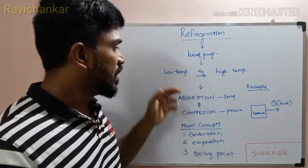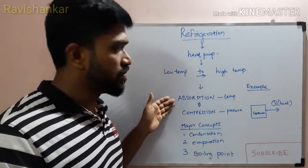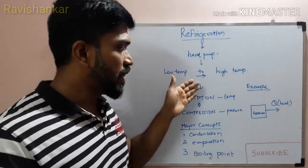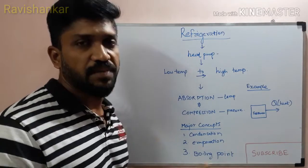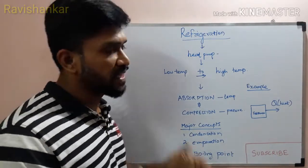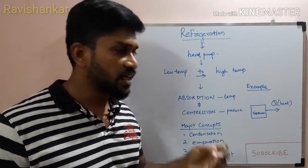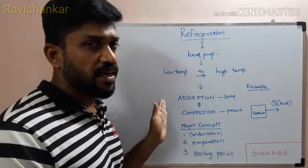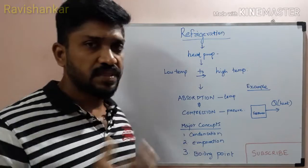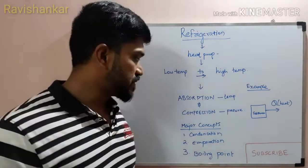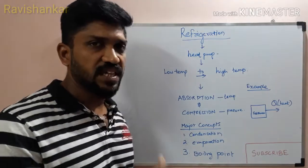There are two types: Absorption and Compression. A compressor is used to pressurize, which raises the temperature. This is how heat is managed in the refrigeration system.